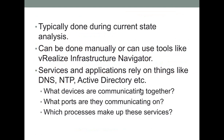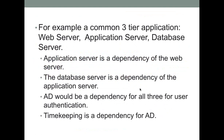The example I'll use throughout is a common three-tier application: a web interface or web server, the application layer, and the database. Think of it as a chain of events — the web server is dependent on the application server, the application server is dependent on the database, and all three may be dependent on Active Directory. Active Directory is also dependent on timekeeping — NTP. So that illustrates some of our dependencies.